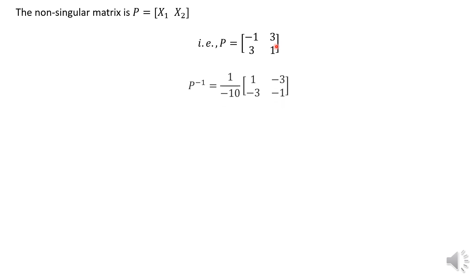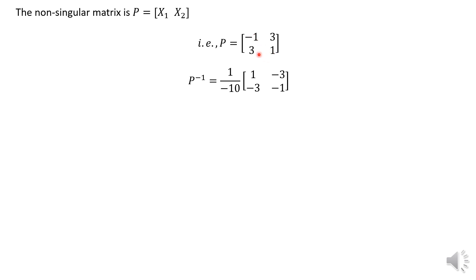Next, write down P inverse. Interchange the diagonal elements and change the signs of the off-diagonal elements. The determinant of P is (-1)(1) - (3)(3) = -1 - 9 = -10. So P inverse = (1/-10) times [[1, -3], [-3, -1]].